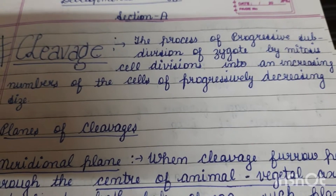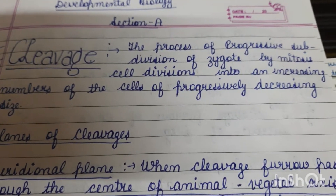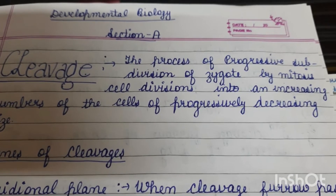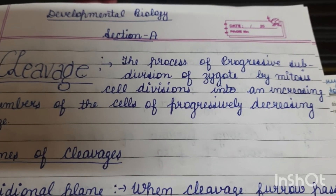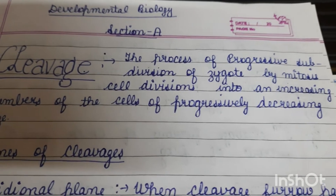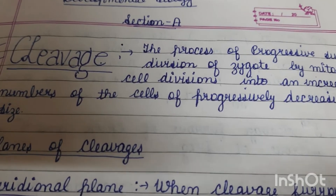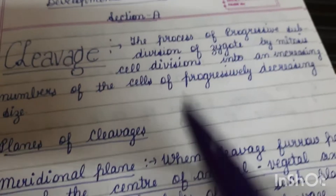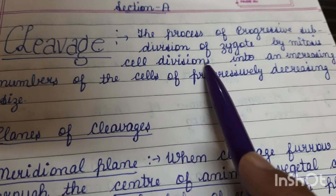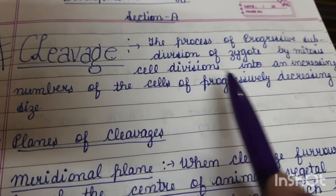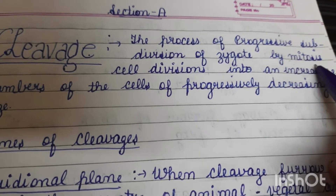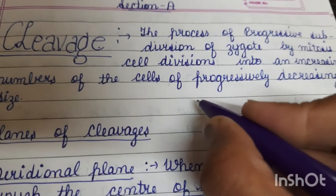Before starting cleavage, it is strictly speaking that embryonic development starts at the time of fertilization. The fertilization product, that is the zygote, is formed by fertilization and it is a single cell. The zygote is ready to divide. Cleavage is the process of progressive subdivision of the zygote by mitotic cell divisions into an increasing number of cells of progressively decreasing size.